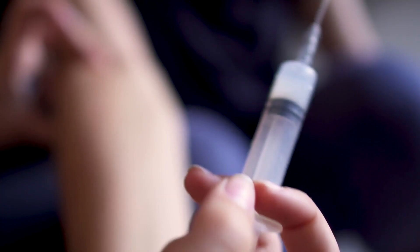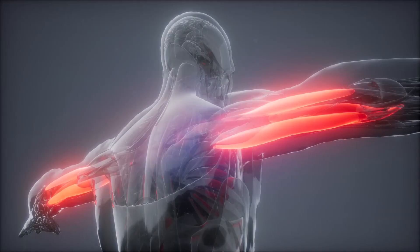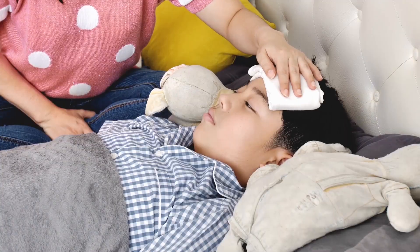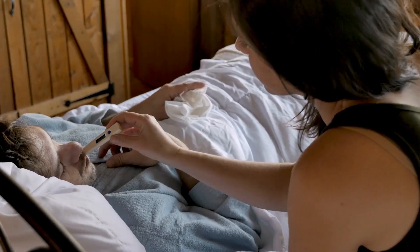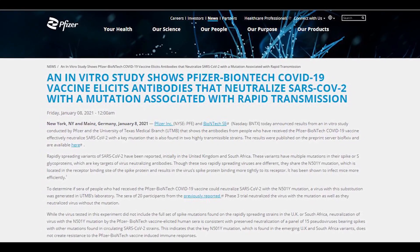The rules also included known adverse reactions and clinical studies of participants aged 16 years and older. Pain at the injection site is the most common at 84.1%, followed by fatigue at 62.9% and headache at 55.1%. Other reactions include muscle and joint pain, chills, fever, and general weakness. The tests were conducted by Pfizer and the University of Texas Medical Branch.